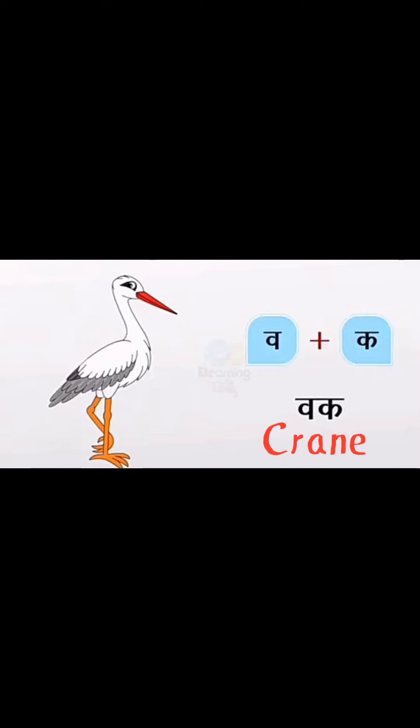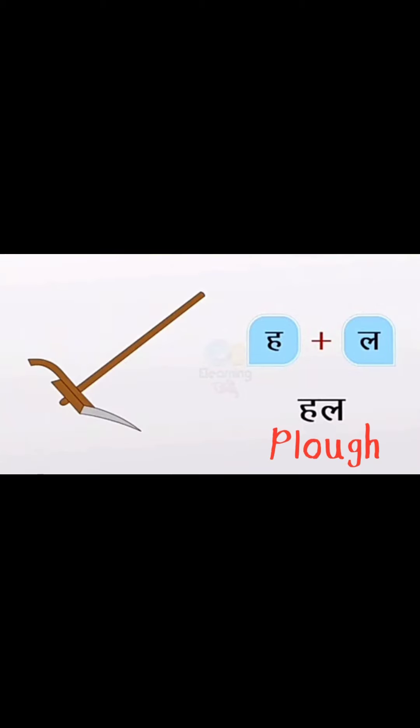Va plus Ka — V-A-C-R-A-N-E. Crime. Ha plus La — H-L-P-L-O-U-G-H. Plow.